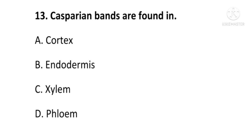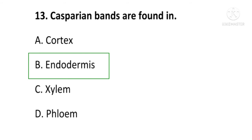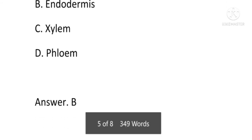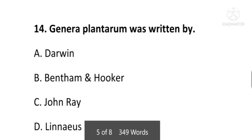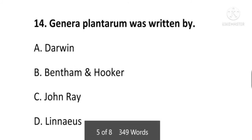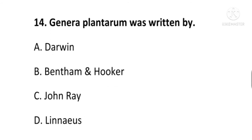Next question: Casparian bands are found in — cortex, endodermis, xylem, or phloem? The answer is B, endodermis. Casparian bands are found in endodermis. B is the correct option.